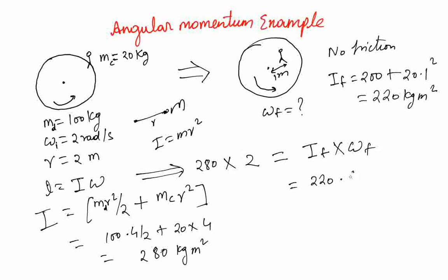That is nothing but 220 times ω_f. So we get ω_f equals 560 divided by 220. And that should be 28 over 11 radians per second.